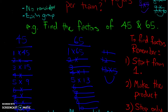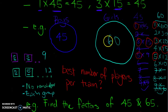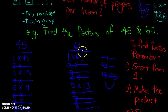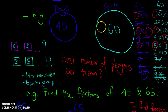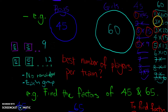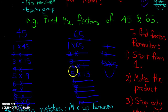Note: the previous real-life example used 60 girls, while this exam question uses 65 — but it doesn't really matter since the questions don't link. The process of finding factors of 60 is the same; 60 just has more factors — twelve factors for 60, versus only four factors for 65.